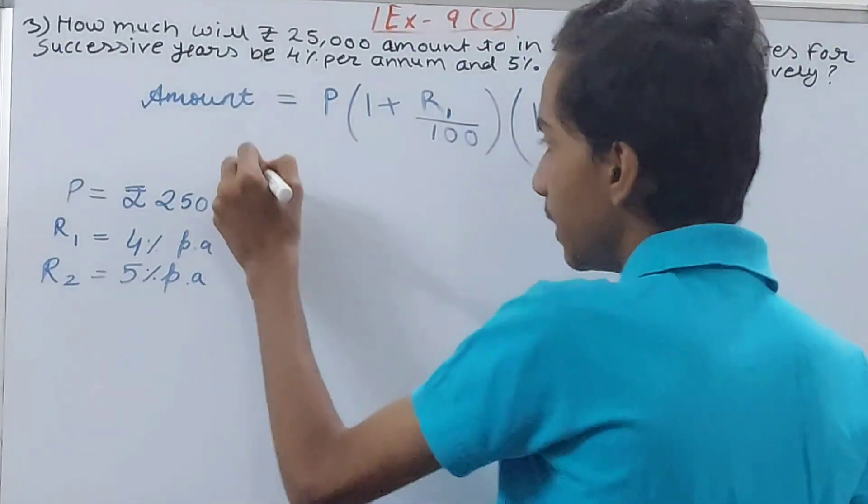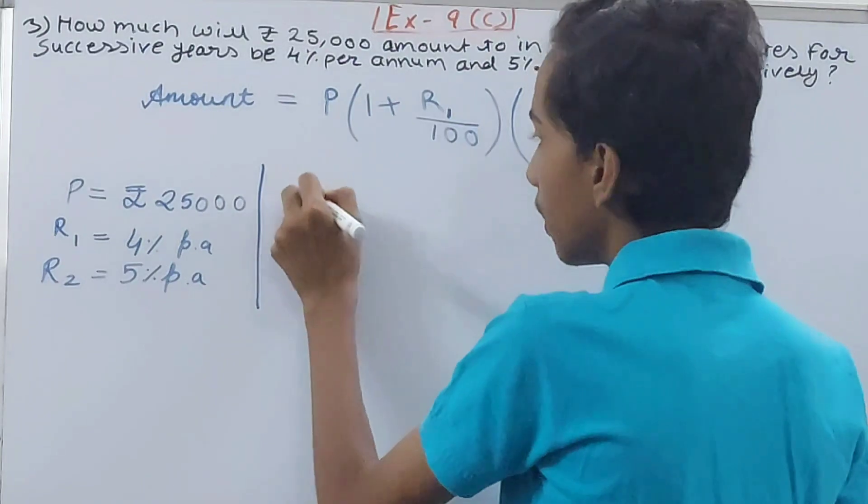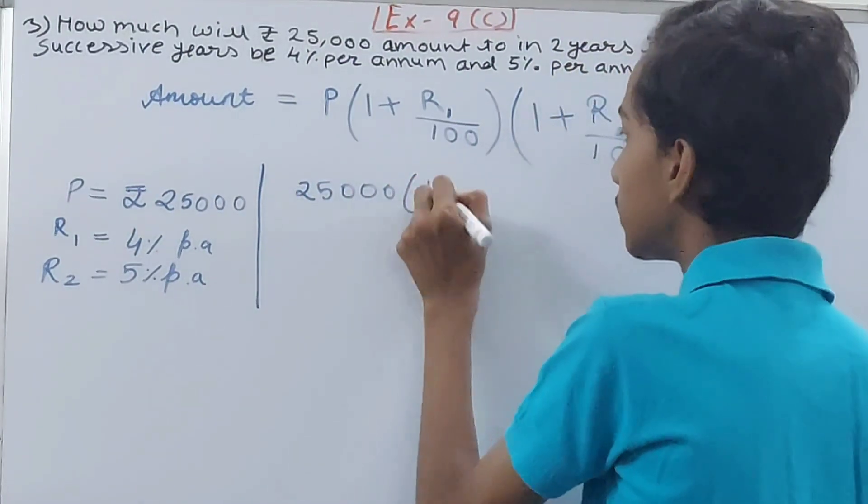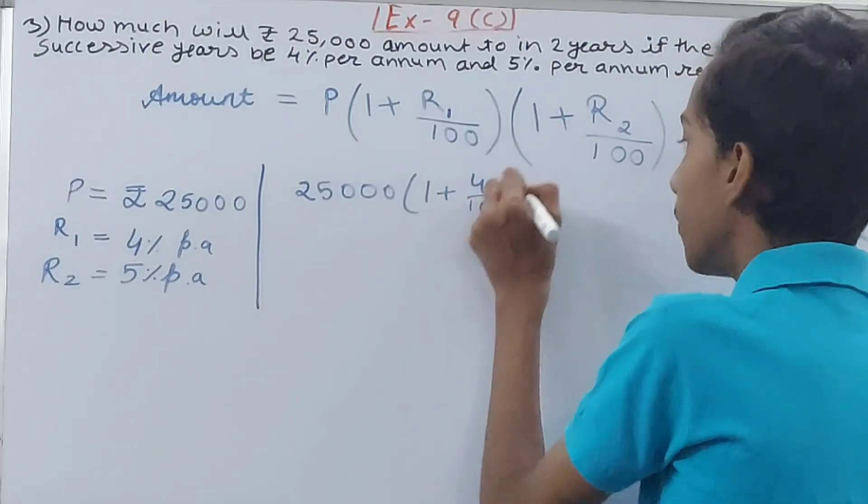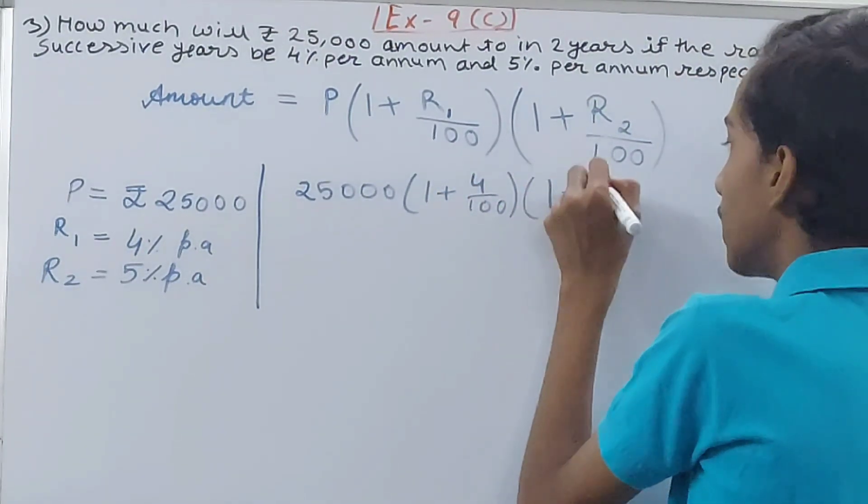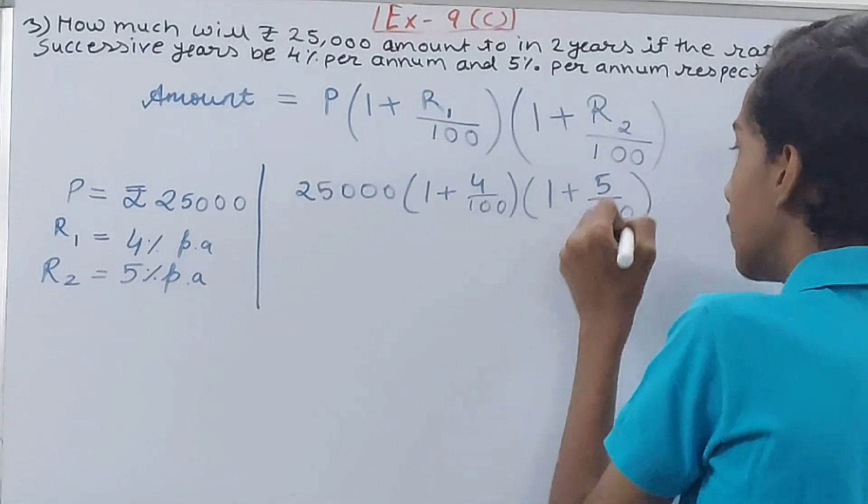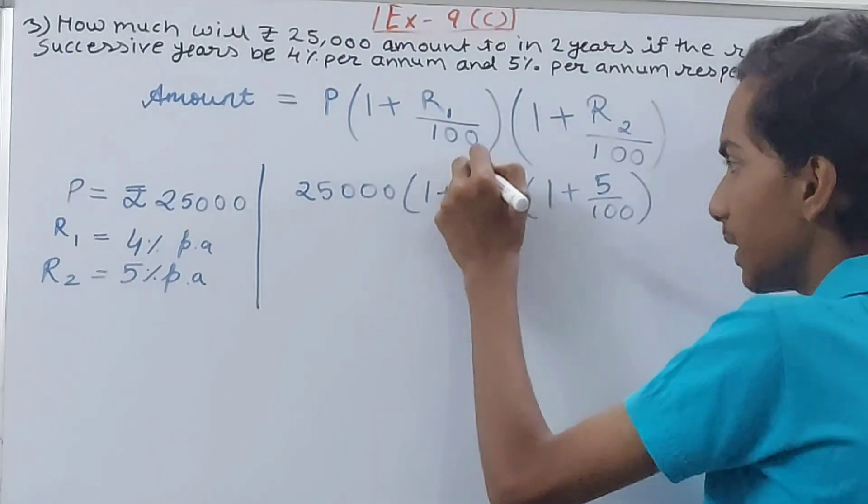So we'll have the principle, that is 25,000 × (1 + R1, that is 4/100) × (1 + R2, that is 5/100). Okay, that's it. Now I'll simplify these inside these brackets. So we'll have 1, and this will go 25 times by 4. Now 5 and 100 will go 1 and 20 times respectively. So what do you have here?